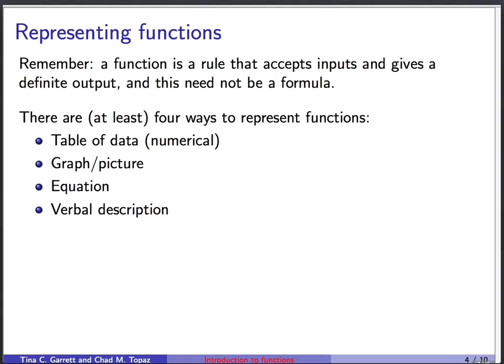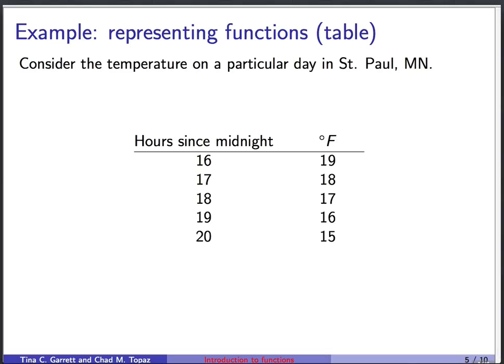There are many ways to represent functions, and we're going to run through some examples of these quickly. We could be talking about a table of data, a graph or a picture, an equation, or a verbal description. To start out with a table, this is very straightforward. We could say, consider the temperature on a particular day in St. Paul, Minnesota, and our independent variable is going to be hours since midnight. That's the thing we're going to place as an input. And the output is simply, what is the temperature at that time in degrees Fahrenheit? Input is time, output is temperature. Here is a table of data. This is one way of describing that function.